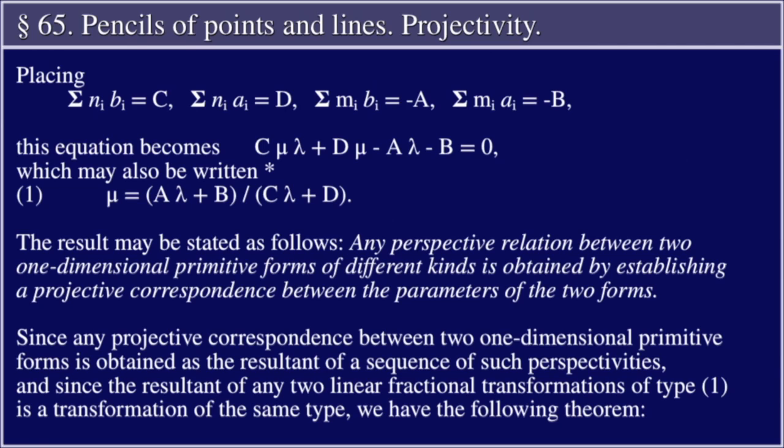The result may be stated as follows: Any perspective relation between two one-dimensional primitive forms of different kinds is obtained by establishing a projective correspondence between the parameters of the two forms. Since any projective correspondence between two one-dimensional primitive forms is obtained as the resultant of a sequence of such perspectivities, and since the resultant of any two linear fractional transformations of type 1 is a transformation of the same type, we have the following theorem.